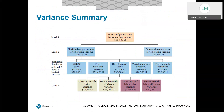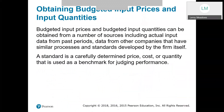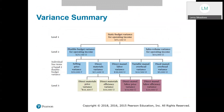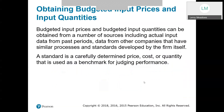We left off here. Let's talk about getting budgeted input prices and input quantities. We can get these from a number of different sources: actual input data from past periods, maybe data from other companies that have similar processes, or maybe we've developed some standard by the firm itself. A standard is simply a carefully determined price, cost, or quantity that is going to be used as a benchmark for judging performance. That's how we can compute whether we have a price variance or efficiency variance for direct materials or direct manufacturing labor, because we're carefully benchmarking — carefully determining that price, cost, or quantity so we can see how well we perform to our budget.